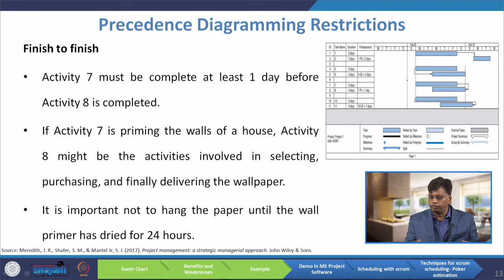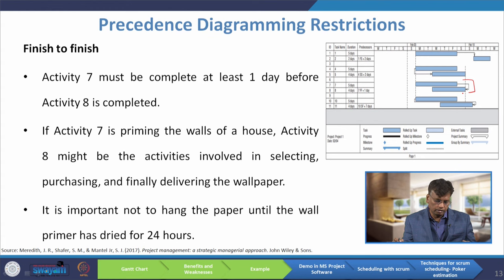The next relationship is finish-to-finish. Activity seven must be complete at least one day before activity eight is completed — we refer only to the finishing of these two activities. For example, if activity seven is priming the walls of the house, activity eight might involve selecting, purchasing, and delivering the wallpaper. It is important not to hang the paper until the wall primer has dried for 24 hours.